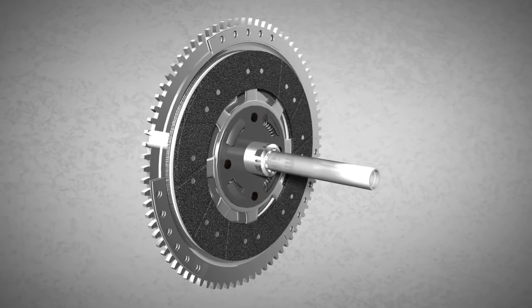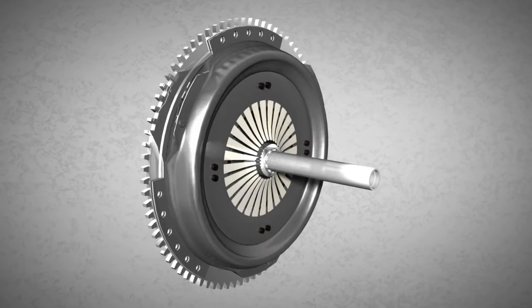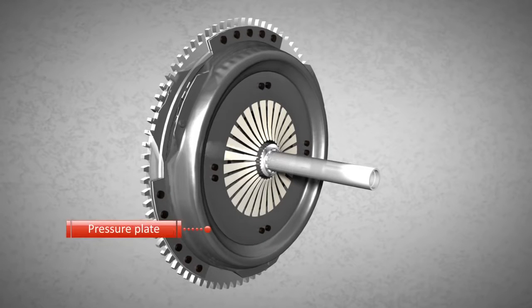The pressure plate is needed for engaging and disengaging the clutch disc. The pressure plate is riveted to the flywheel. As a result, the pressure plate rotates when the flywheel rotates.